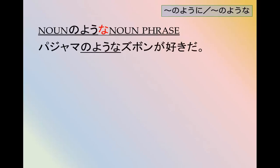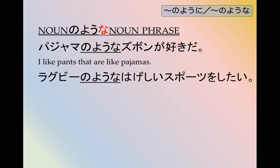For example, パジャマのようなズボンが好きです. I like pants that are like pajamas. ラグビーのようなはげしいスポーツをしたい. I want to play violent or intense sports like rugby.